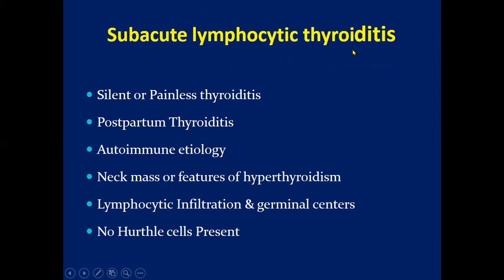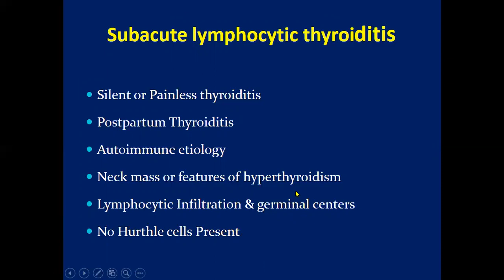Subacute lymphocytic thyroiditis is also called silent or painless thyroiditis. Up to 5% of women may have postpartum thyroiditis. Painless and postpartum thyroiditis are variants of Hashimoto's thyroiditis, since the majority of patients have circulating antithyroid peroxidase antibodies or a family history of other autoimmune thyroid diseases. In this condition, there is no presence of Hürthle cells. Another less common form is Riedel's thyroiditis, which is a rare disease.